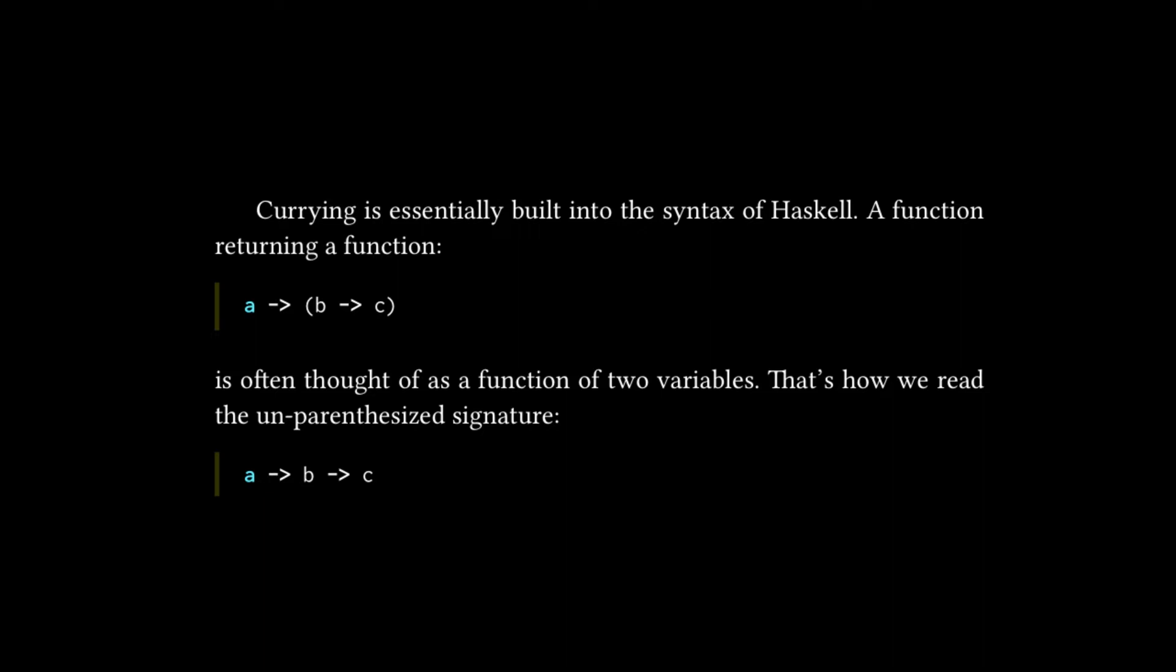Just highlighting that basically these two things are the same, and we can think of them slightly differently. Most people I tell to think of a -> b -> c as a function that takes two inputs and returns a single output, but technically it's closer to really what it is at the top. So every function in Haskell takes a single argument and then returns something.